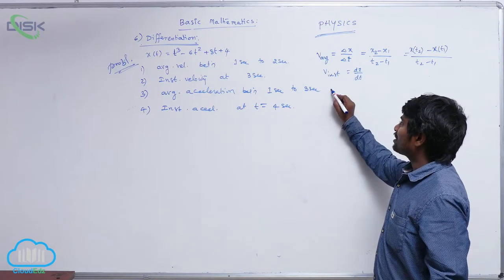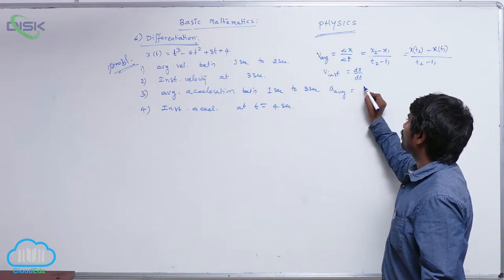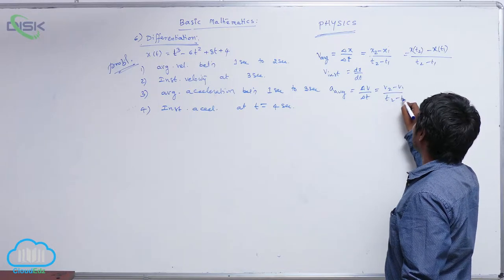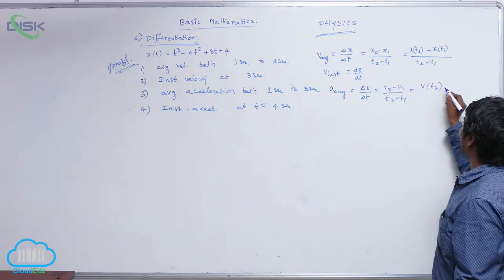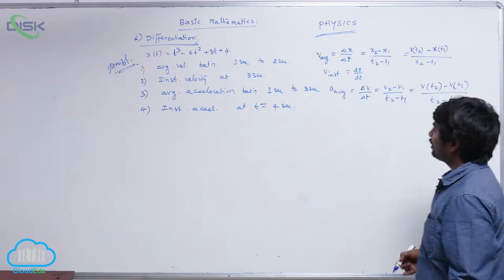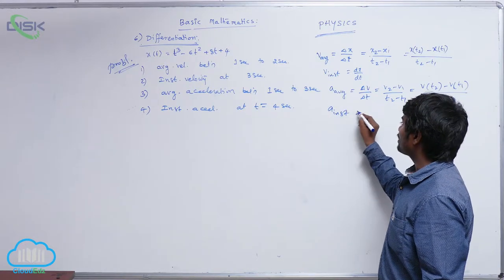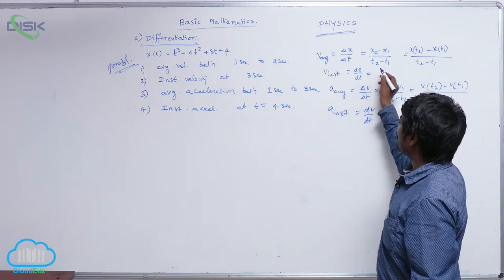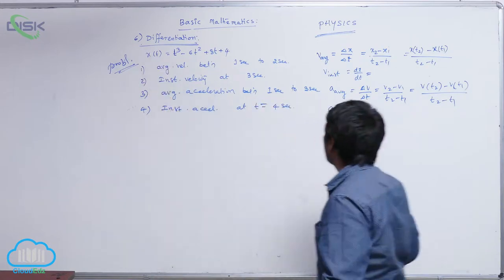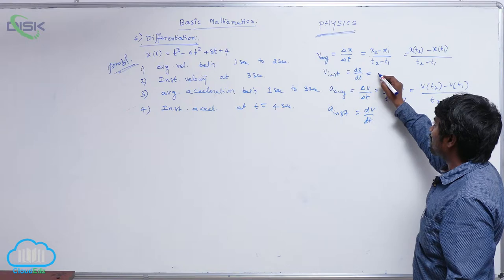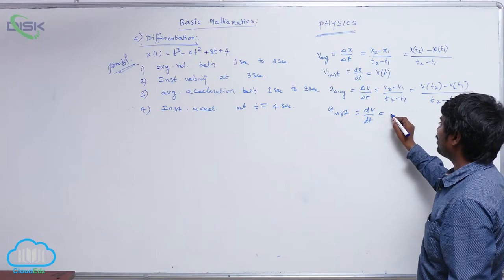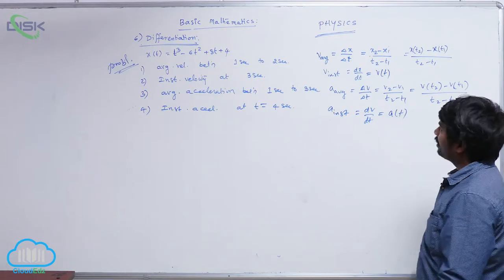Average acceleration is equal to Δv / Δt, or (v₂ - v₁) / (t₂ - t₁), which can also be written as [v(t₂) - v(t₁)] / (t₂ - t₁). Instantaneous acceleration is equal to dv/dt. Here, position is a function of time x(t), instantaneous velocity is v(t), and instantaneous acceleration is a(t).